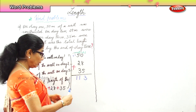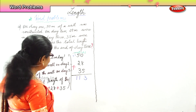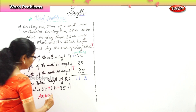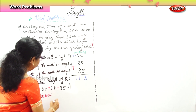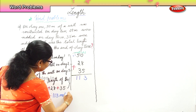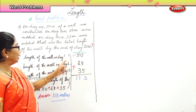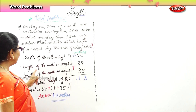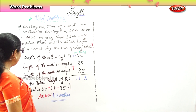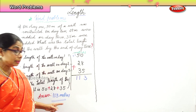The total length of the wall at the end of the third day is 113 meters. So our answer is 113 meters. To summarize: length of wall on day 1 is 50 meters, day 2 is 28 meters, day 3 is 35 meters. Therefore the total length of the wall is 50 plus 28 plus 35, which equals 113 meters.